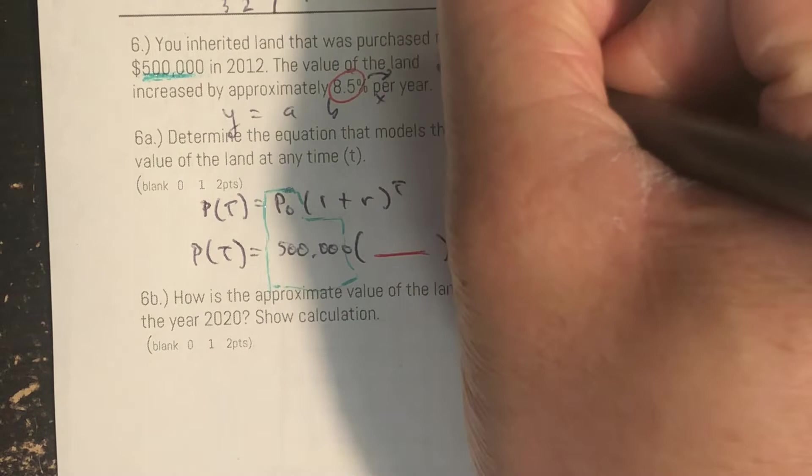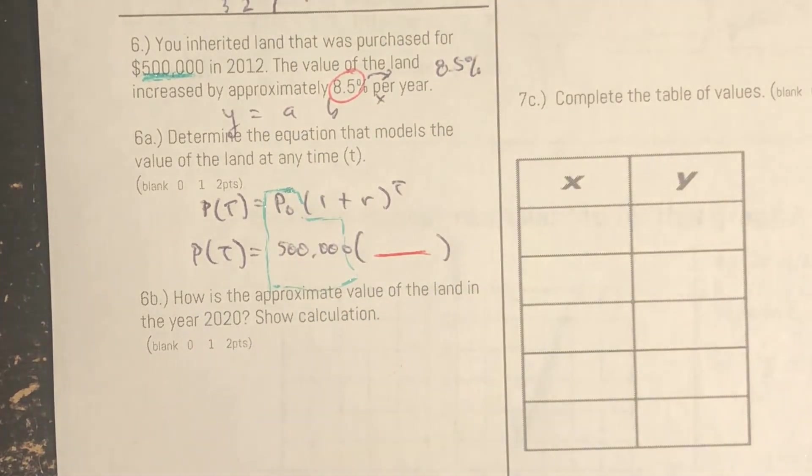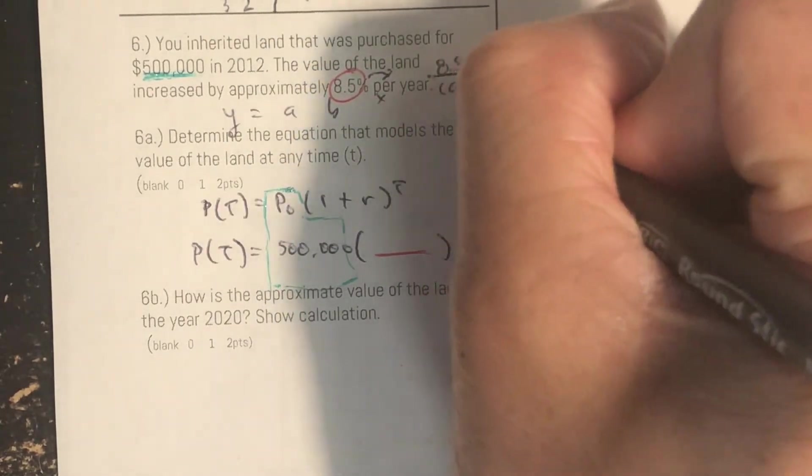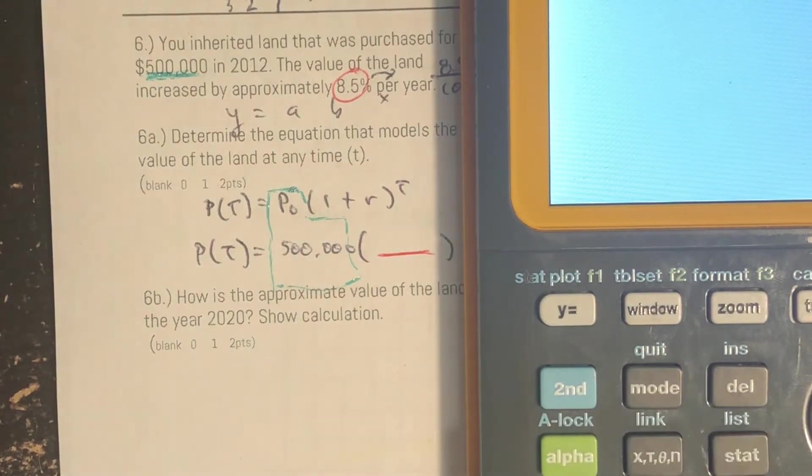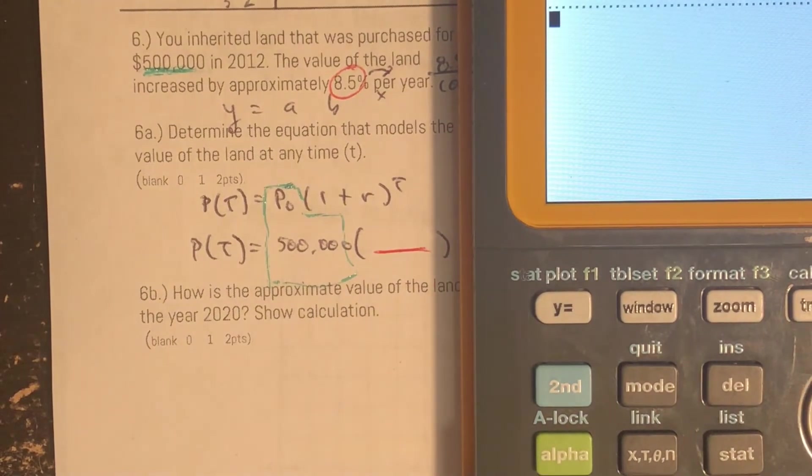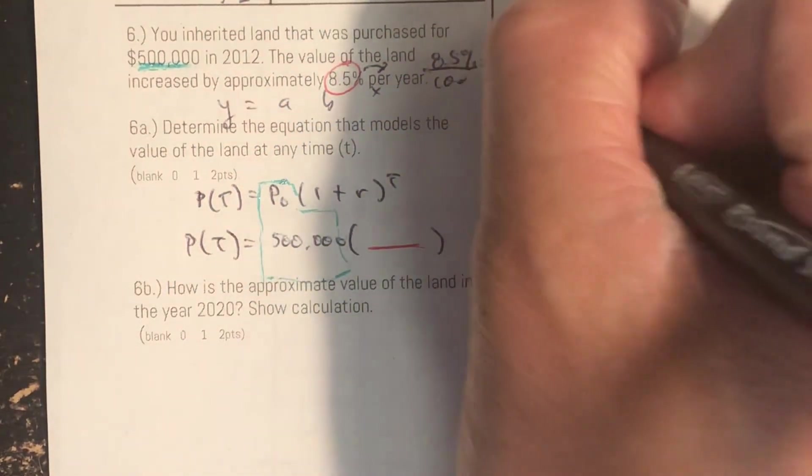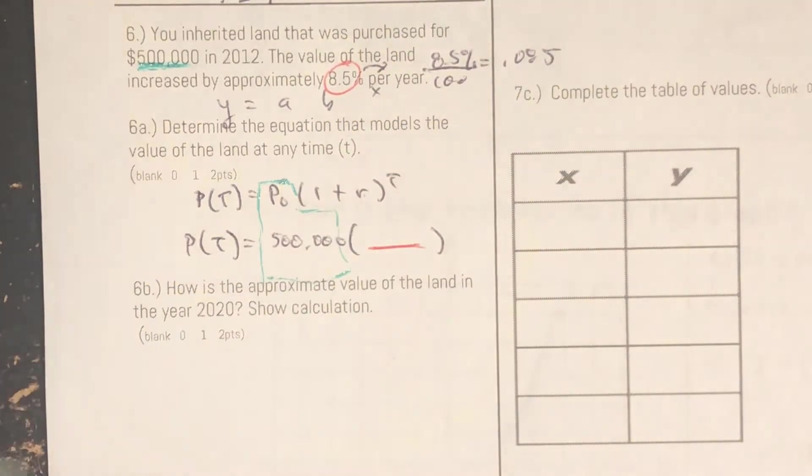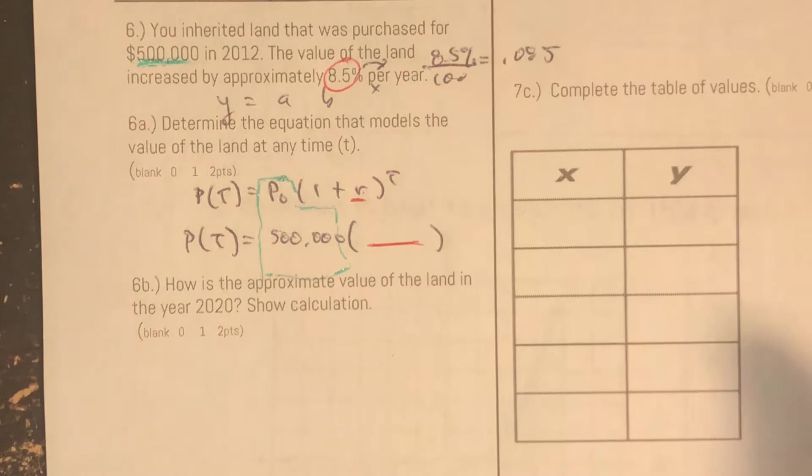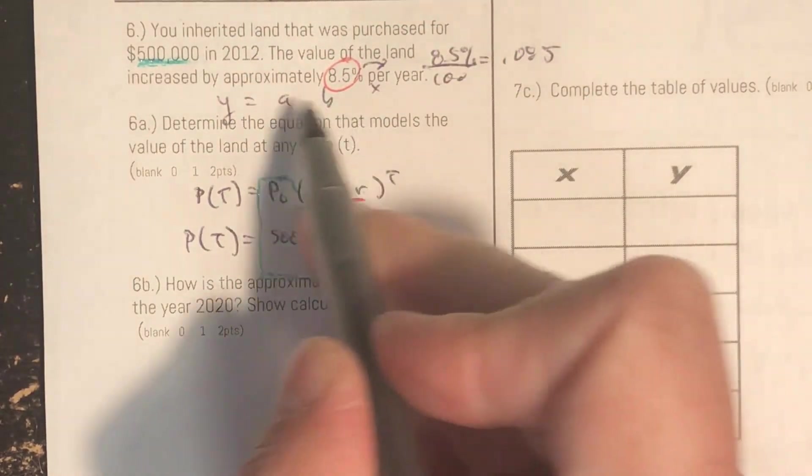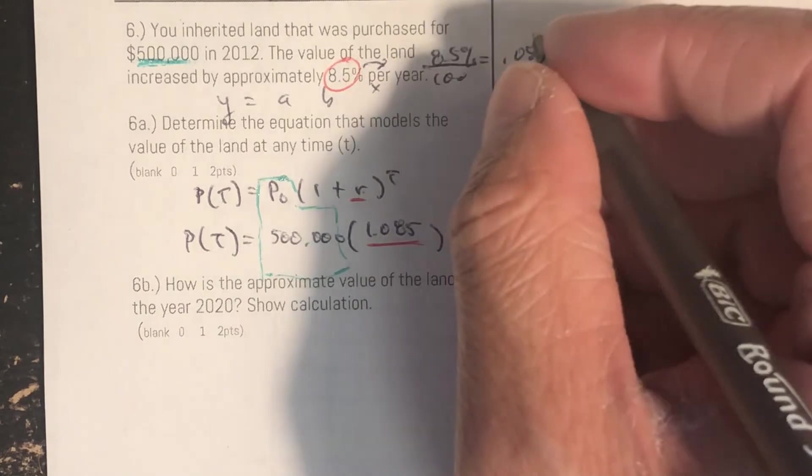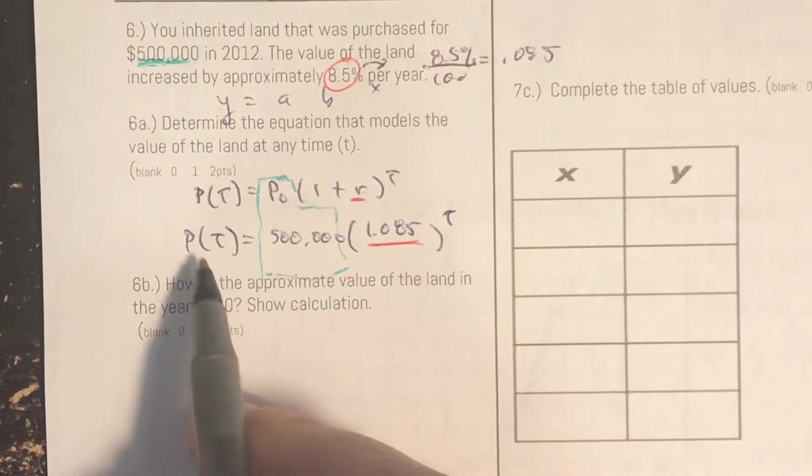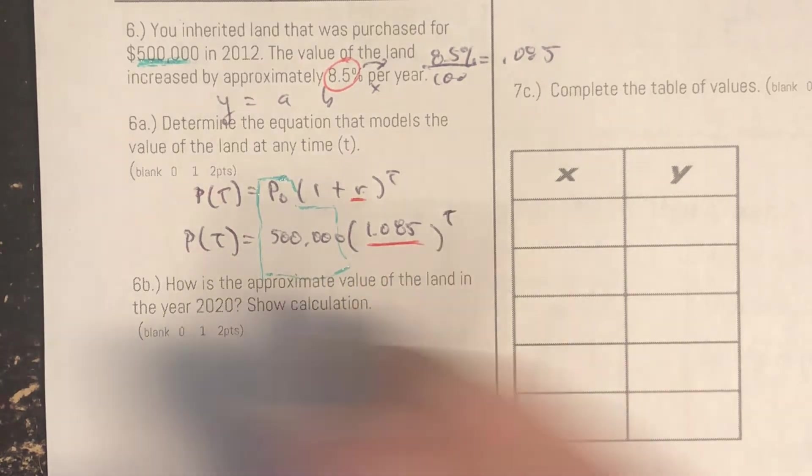So purchased for five hundred thousand dollars is going to be my initial, and then my rate is 8.5. Now for a rate of 8.5, you're going to have to make that a decimal. So 8.5%, in some ways what you're doing is you're dividing by 100. So 8.5% gives you a decimal 0.085. And essentially what you're doing is you're adding that to 1. 1.085 is the same thing as saying it's increased by 8.5% here. And then we don't have a t value.